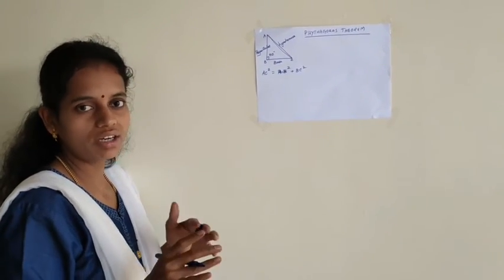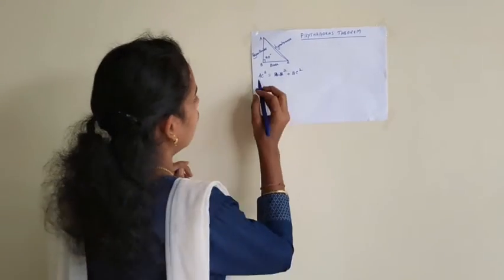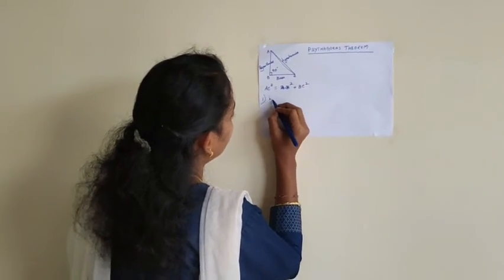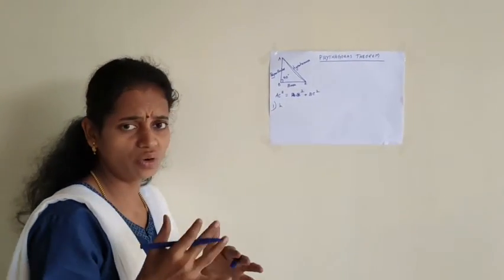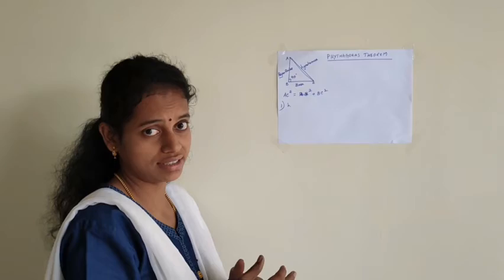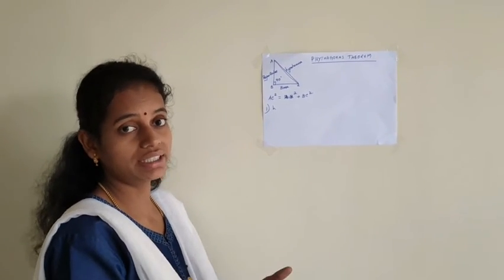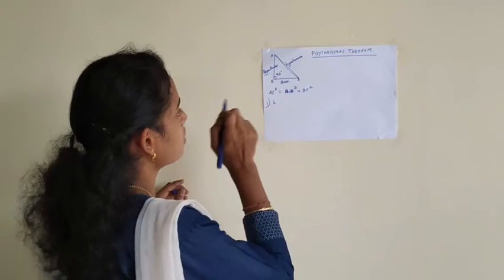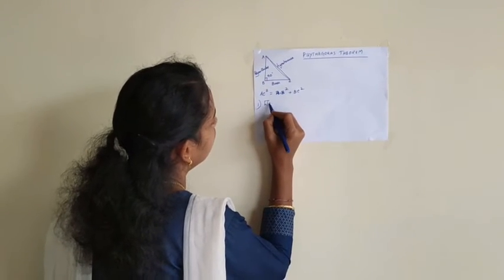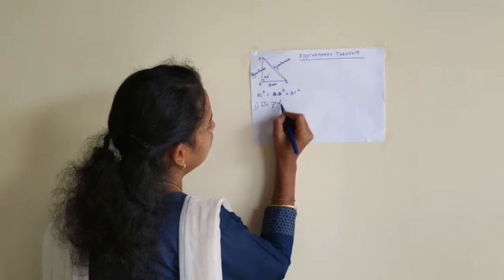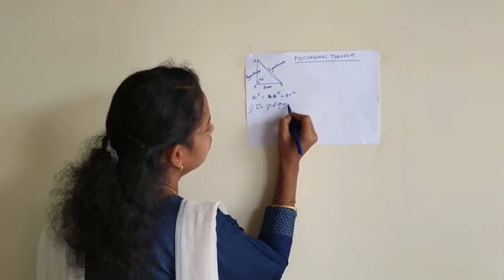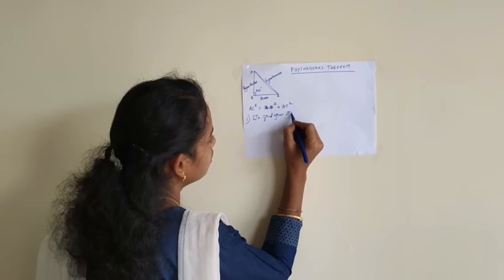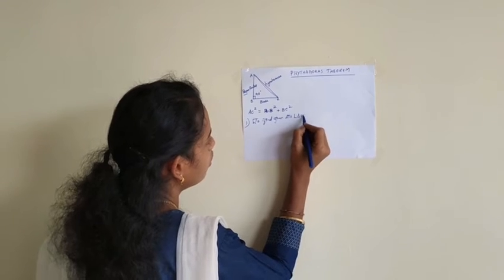Where is this Pythagoras theorem applicable? First one is when we don't know what kind of triangle it is. If you want to find out whether the triangle is a right angle triangle, we can use this Pythagoras theorem.